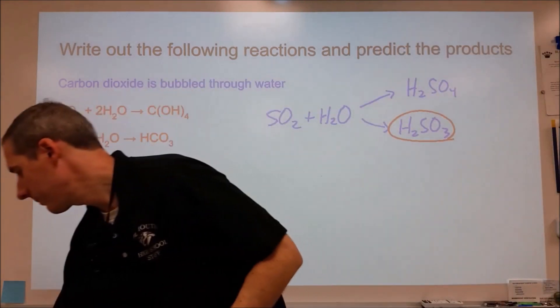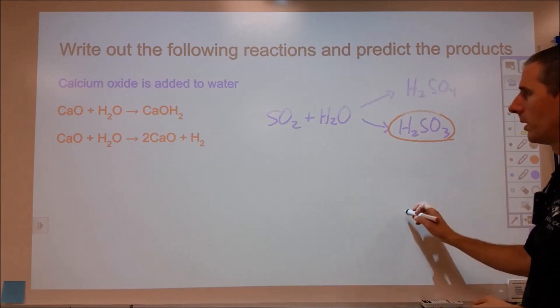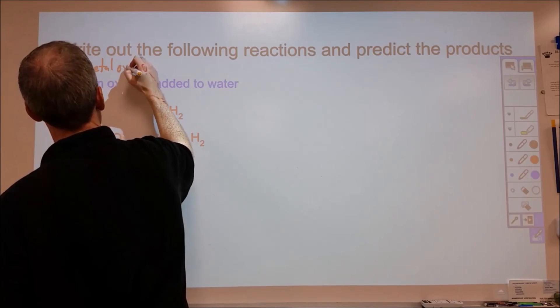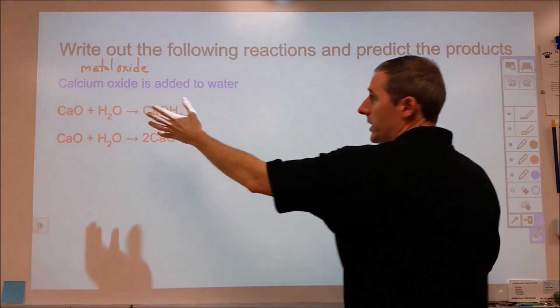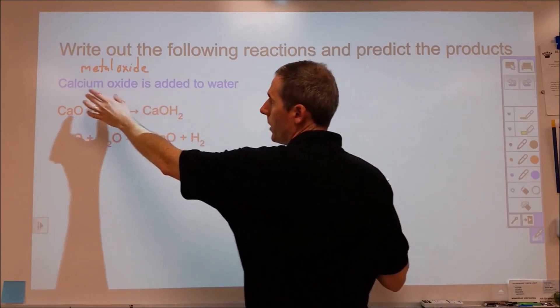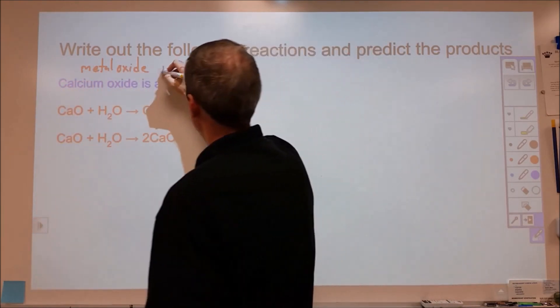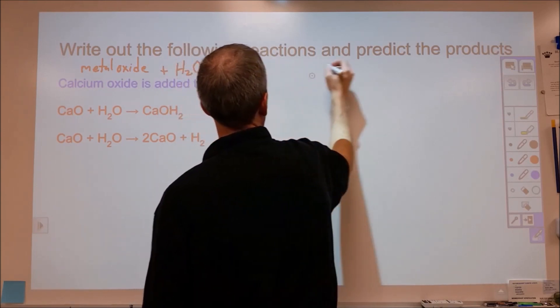Now, second question, calcium oxide is added to water. So here, we're looking at a metallic oxide, or a metal oxide, because calcium is a metal. So not that it's metallic when it's in its oxide form, but originally as an element, calcium is a metal. So when we have a metal oxide plus water, then we're going to form a base, which usually means that we're going to have something with hydroxide in it.